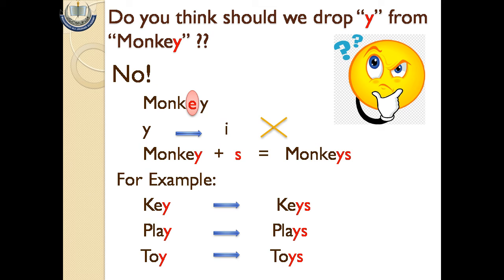When there is a vowel before 'y', then we do not change the 'y' into 'i', we simply add 's'. Jab kisi word mein 'y' se pehle vowel aa jaye, to hum 'y' ko 'i' mein change nahi karte, balke simply 's' add kar ke plural form banate hain.